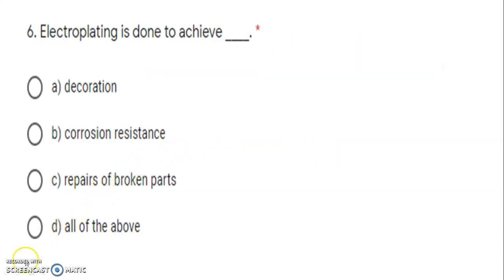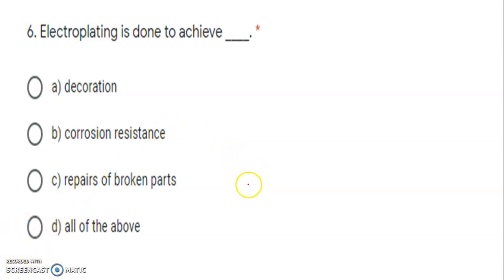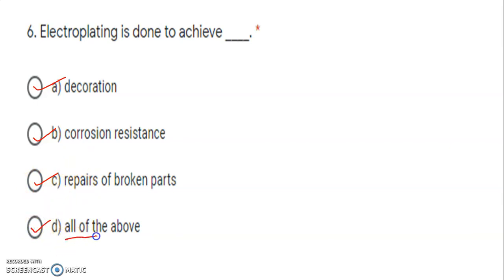Next: electroplating is done to achieve what? Electroplating is done to achieve decoration, corrosion resistance to improve the corrosion resistance of the metal, and repair broken parts. So the answer is D — all of the above, as all listed purposes are valid.